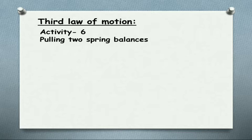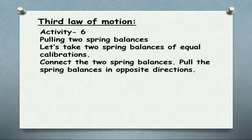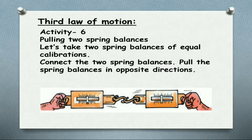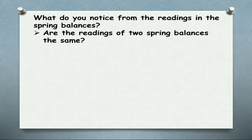Let us go with an activity pulling two spring balances. Take two spring balances of equal calibrations, connect them one to another, pull the spring balances in opposite directions, and we have an observation like this. What do you notice from the readings in the spring balances? Are the readings of the two spring balances the same?